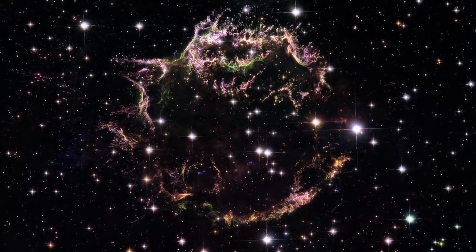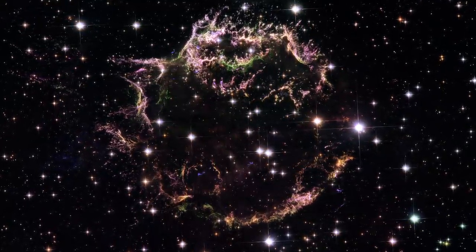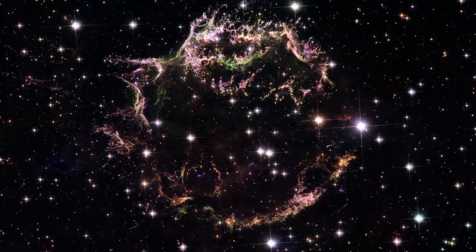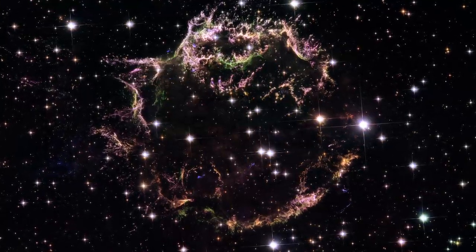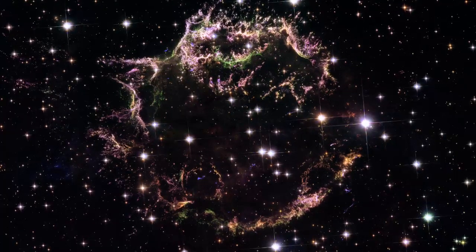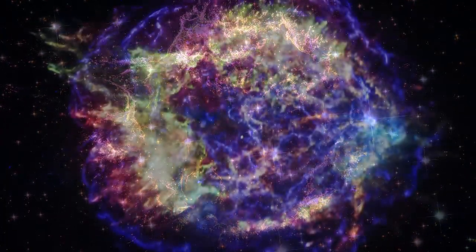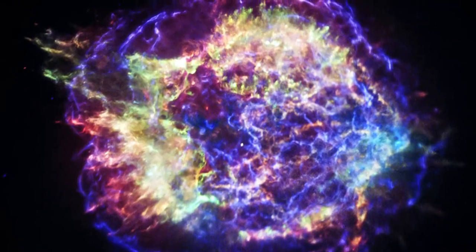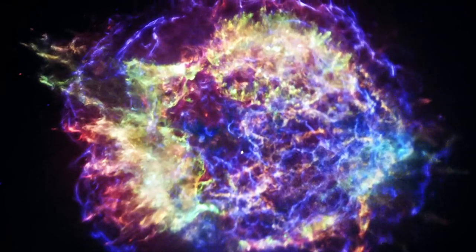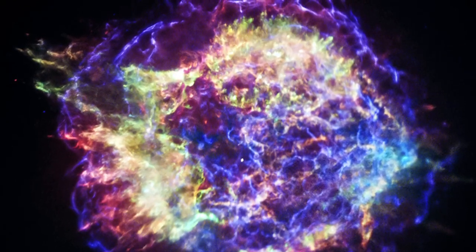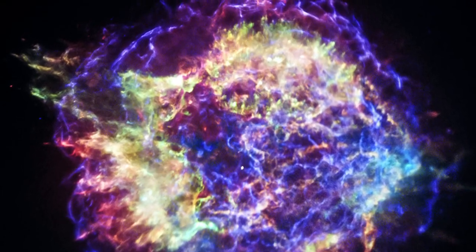Here is a Hubble Space Telescope image of Cassiopeia A. It shows the visible remnant of a supernova glowing at about 10 or 20,000 degrees Celsius. Here is an image from the Chandra X-ray Observatory, showing gas heated to tens of millions of degrees.